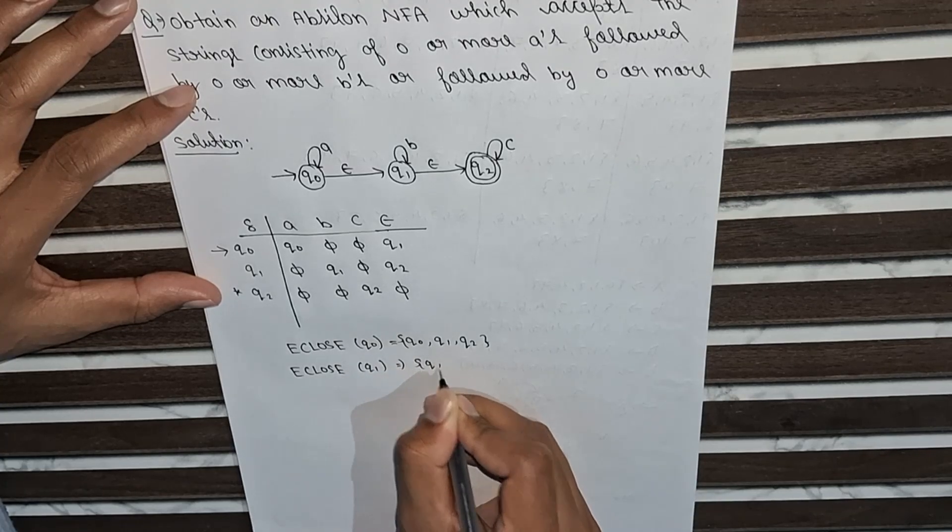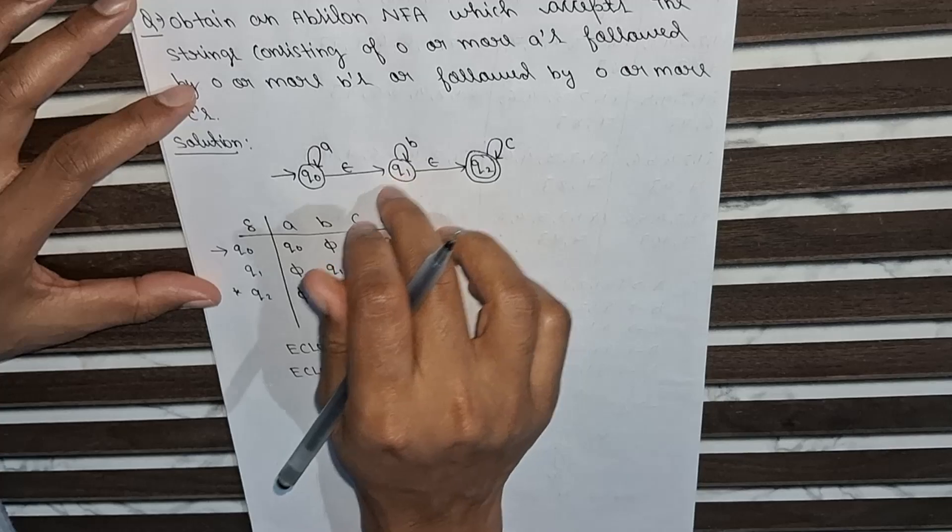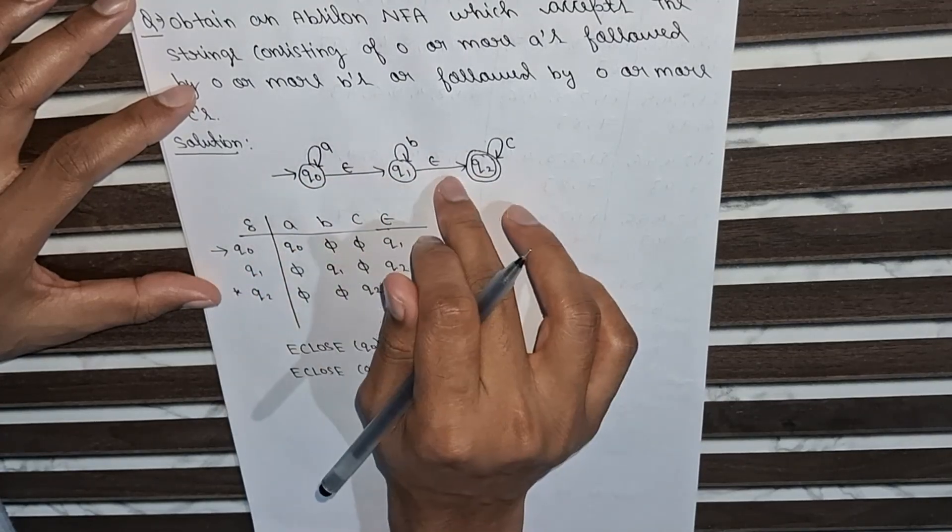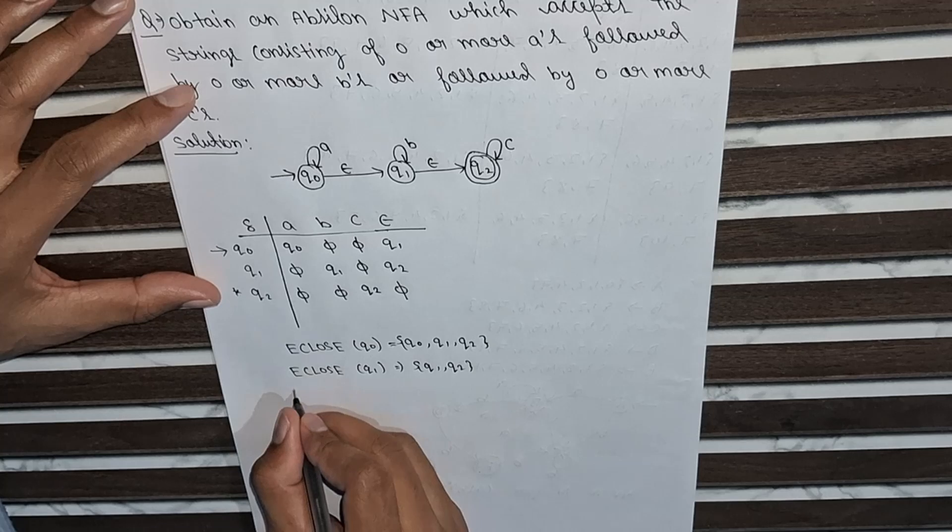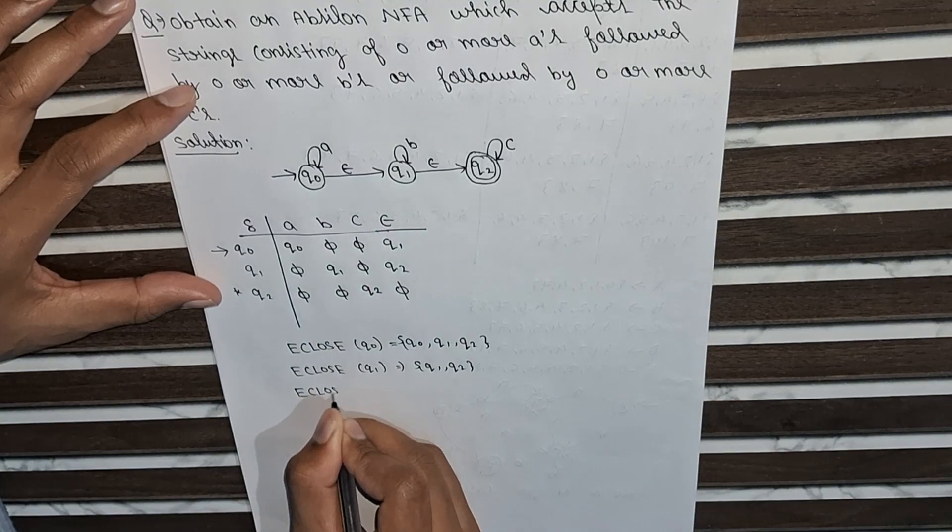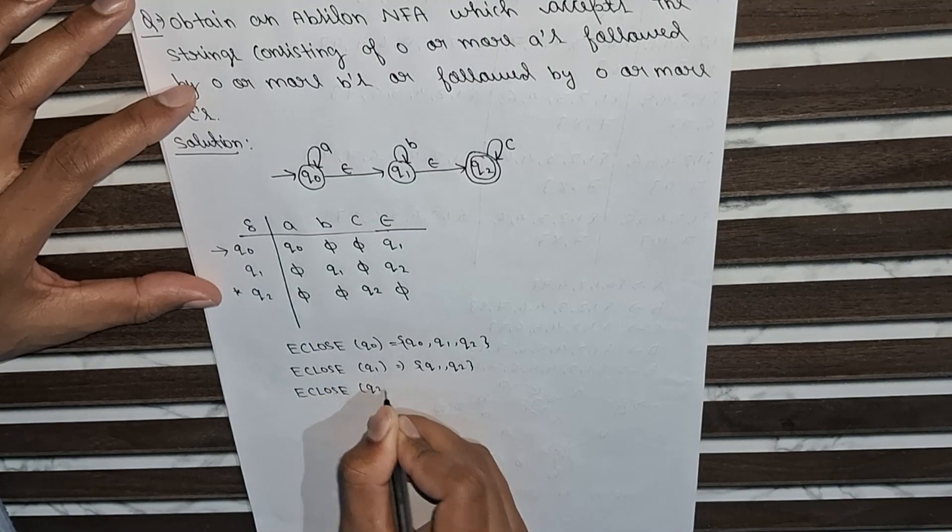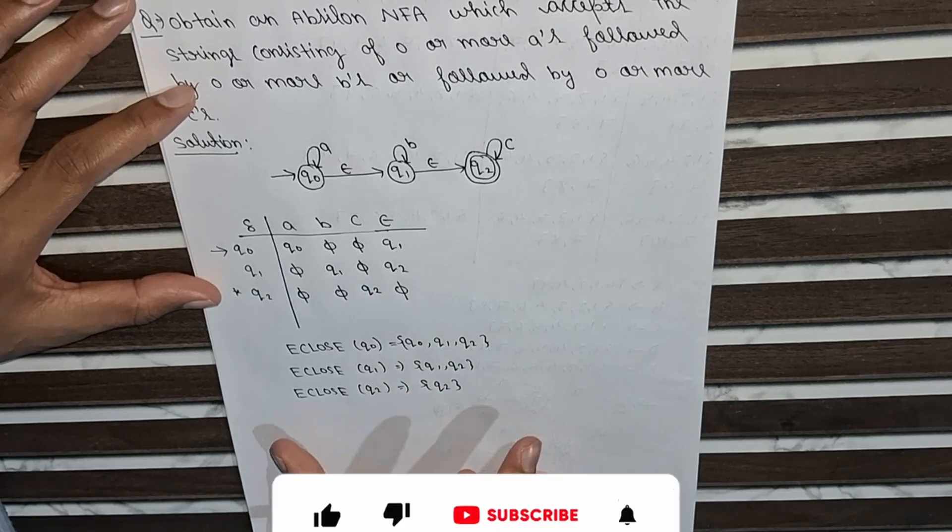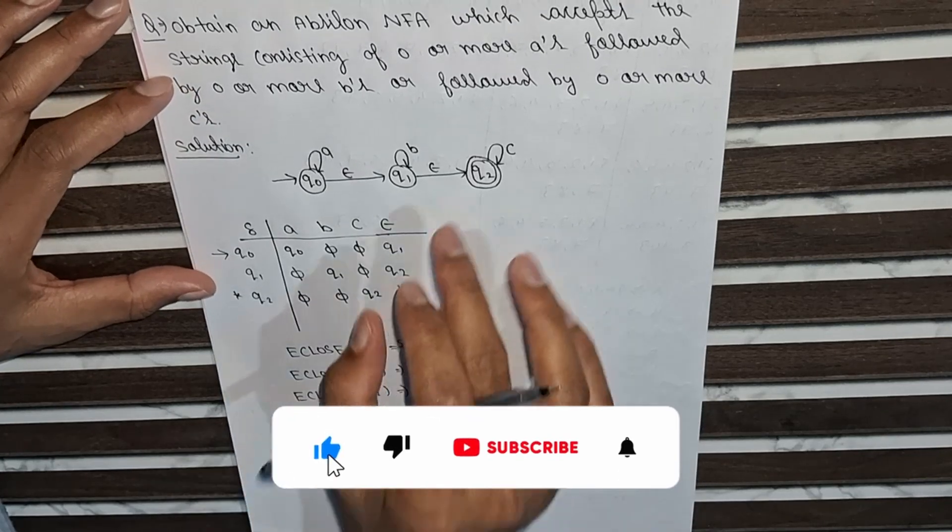Now e-closure of q1 will be q1, comma q2, because there is no going in this direction, q1 to q0. q1 is going in this direction, q1 to q2. That's why e-closure of q2, this will be only q2.